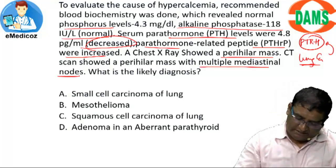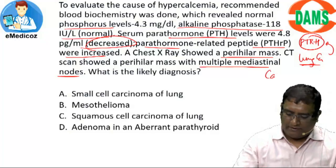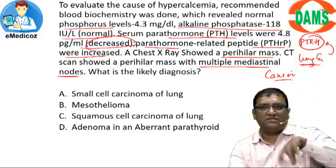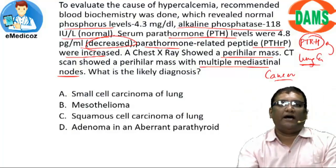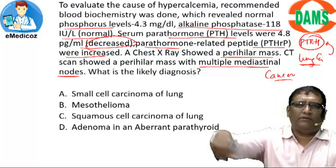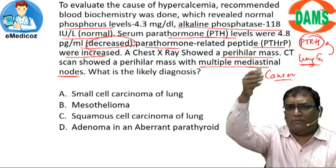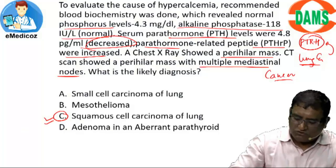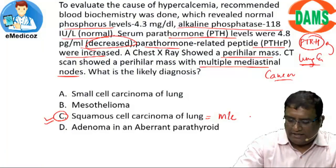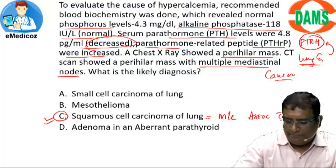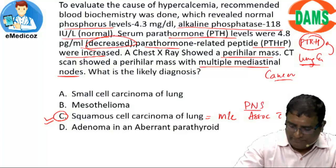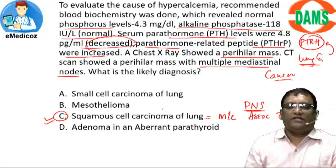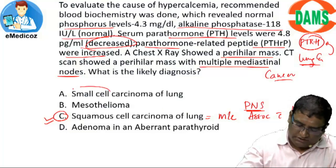There is a cancer producing excess PTHrP, which is causing hypercalcemia, which in turn led to vomiting, altered sensorium, and the other manifestations. Straightaway my diagnosis comes to option C — squamous cell carcinoma of lung — because this is the one most commonly associated with hypercalcemia as a paraneoplastic syndrome. The answer is squamous cell carcinoma of lung.